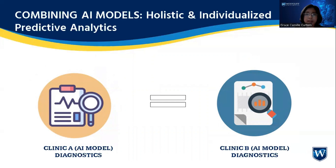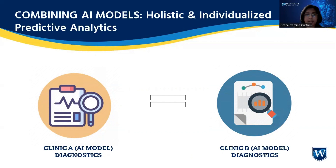Because of AI modeling, we can now use this for more holistic and individualized predictive analytics. Clinic A with a different AI model will always have the same result as Clinic B with a different AI model. With this, we can lower the cost of healthcare because patients don't have to hop from one clinic to another just to test different healthcare diagnosis results. This also solves the interoperability issues of healthcare because we are only sharing AI models between different clinics.